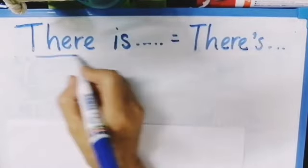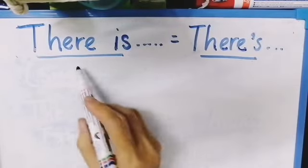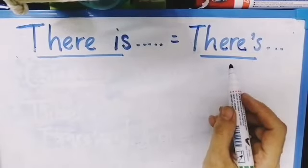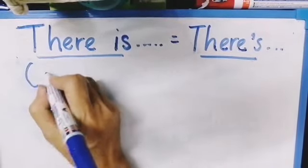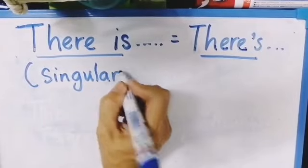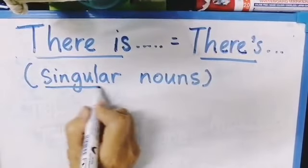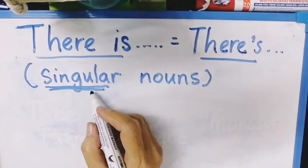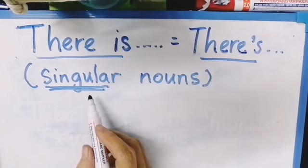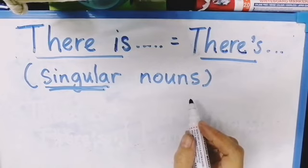Let's look at the first phrase: 'there is', or you can write or say 'there's'. We use 'there is' or 'there's' with singular nouns. Singular here means one, only one — 'hanya satu sahaja'. And the nouns here can be people, animals, objects, places, or anything else.